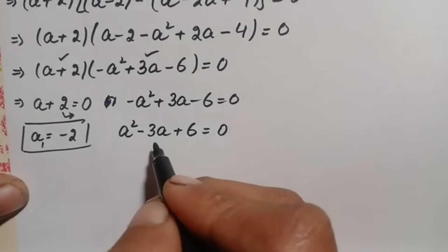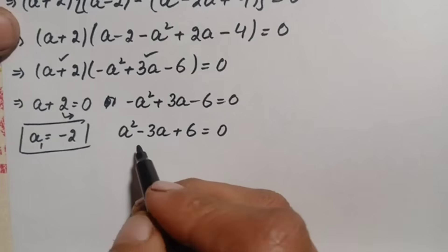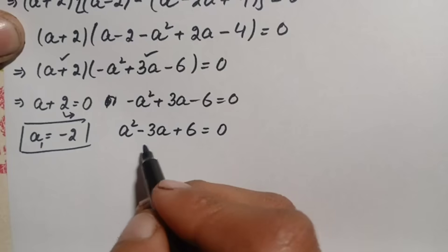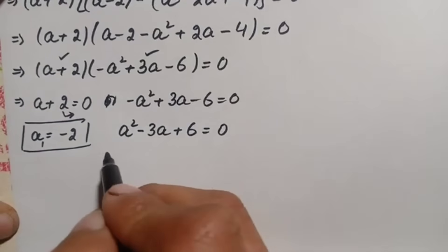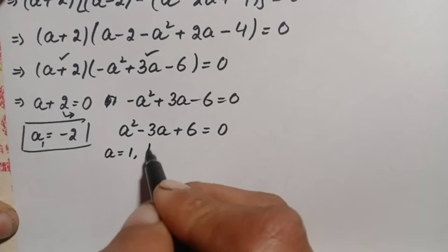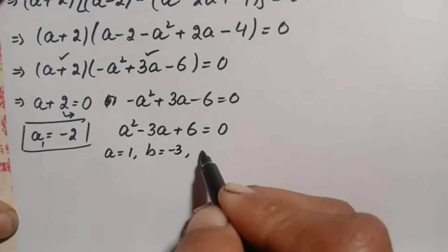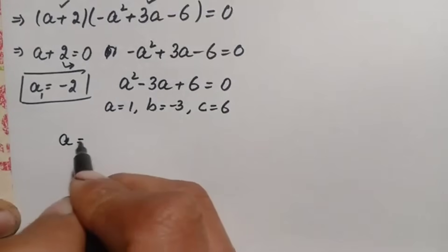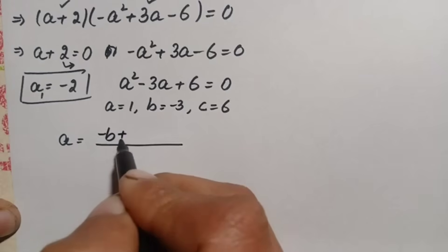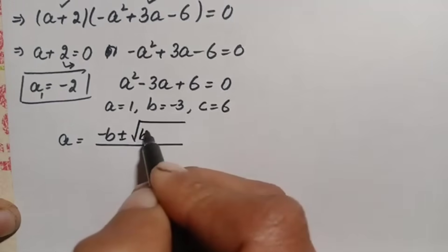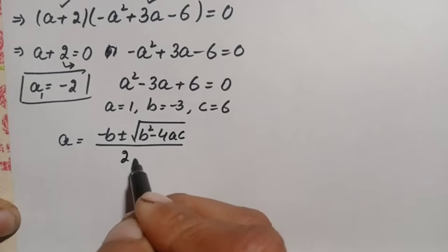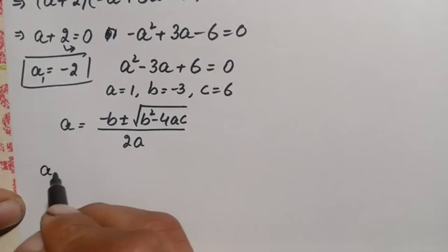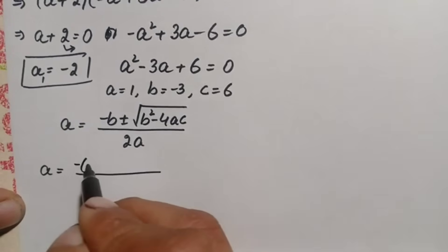We cannot solve this by factorization or completing the square, so we use the quadratic formula. The values are: coefficient a equals 1, b equals negative 3, and c equals 6. The quadratic formula gives a equals negative b plus or minus the square root of b squared minus 4ac, divided by 2a. Substituting, this becomes positive 3 plus or minus the square root of negative 3 squared minus 4 times 1 times 6, divided by 2.